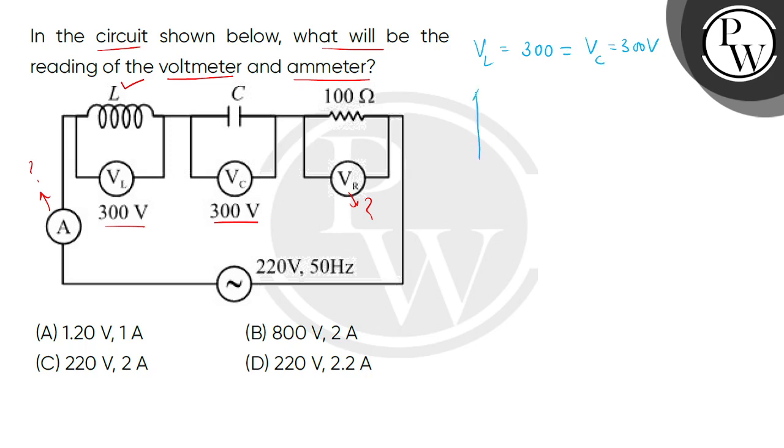If we draw a phasor diagram, this is VL, this will be VC, and this is the current on the phasor diagram. VL and VC are exactly out of phase, which means VL minus VC equals zero.